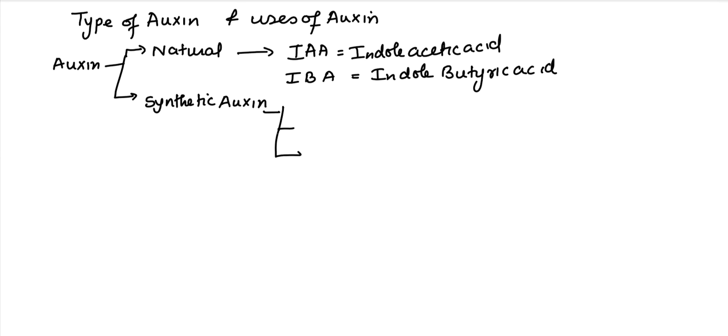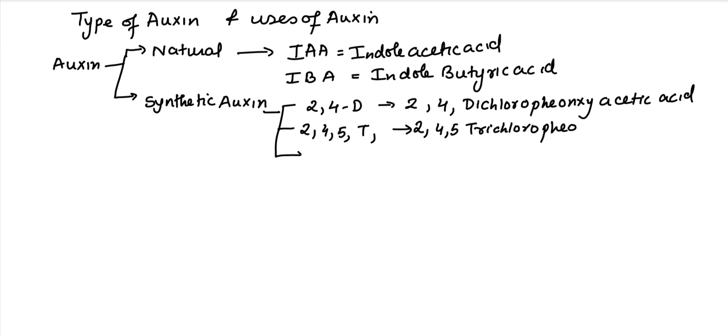Now if we are talking about the synthetic one, we have three different types. One is 2,4-D, known as 2,4-dichlorophenoxyacetic acid. Leaving this we have NAA which abbreviates for naphthalene acetic acid.